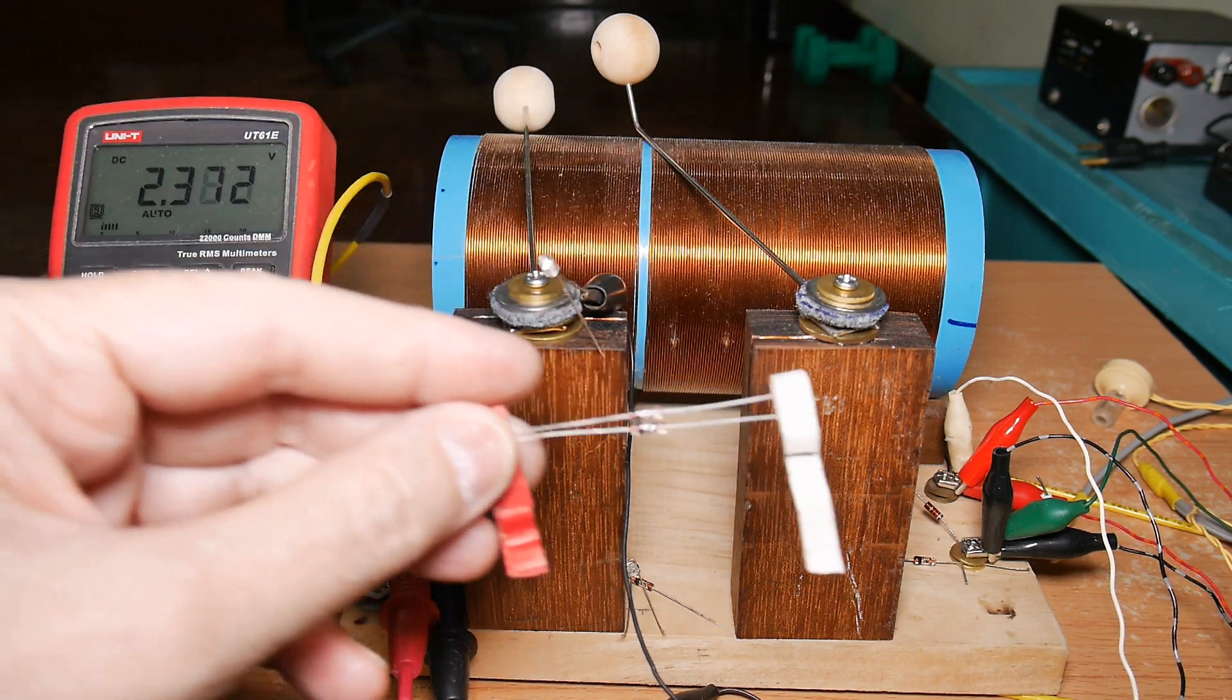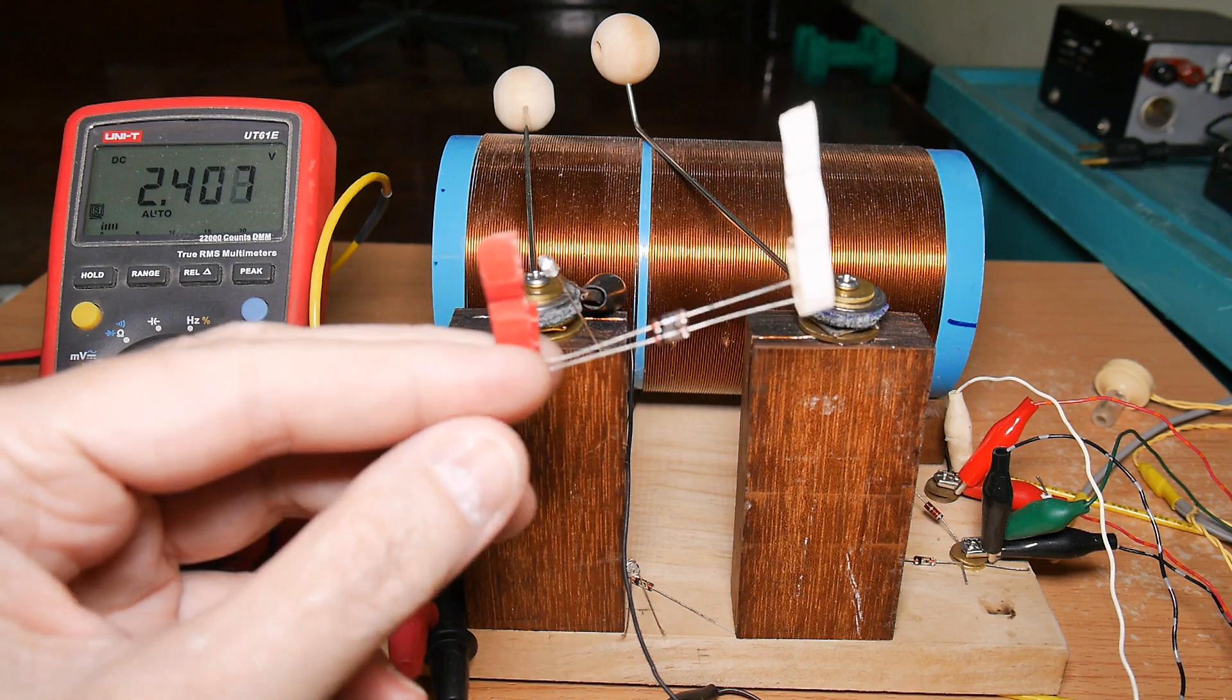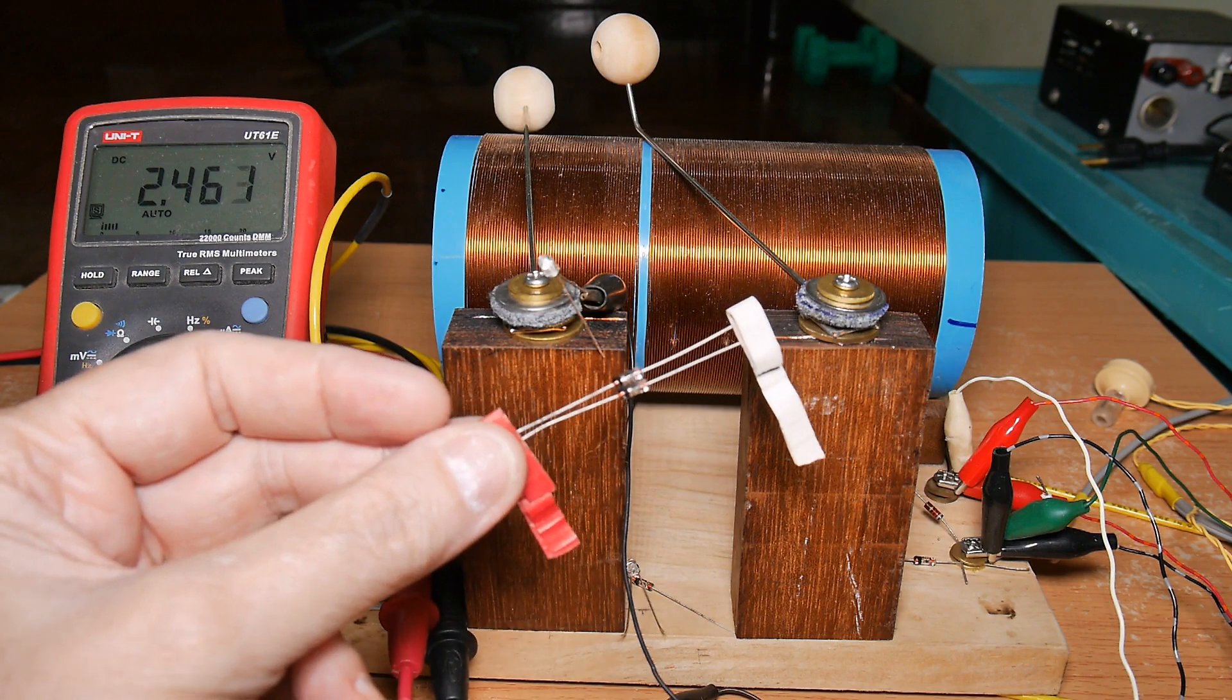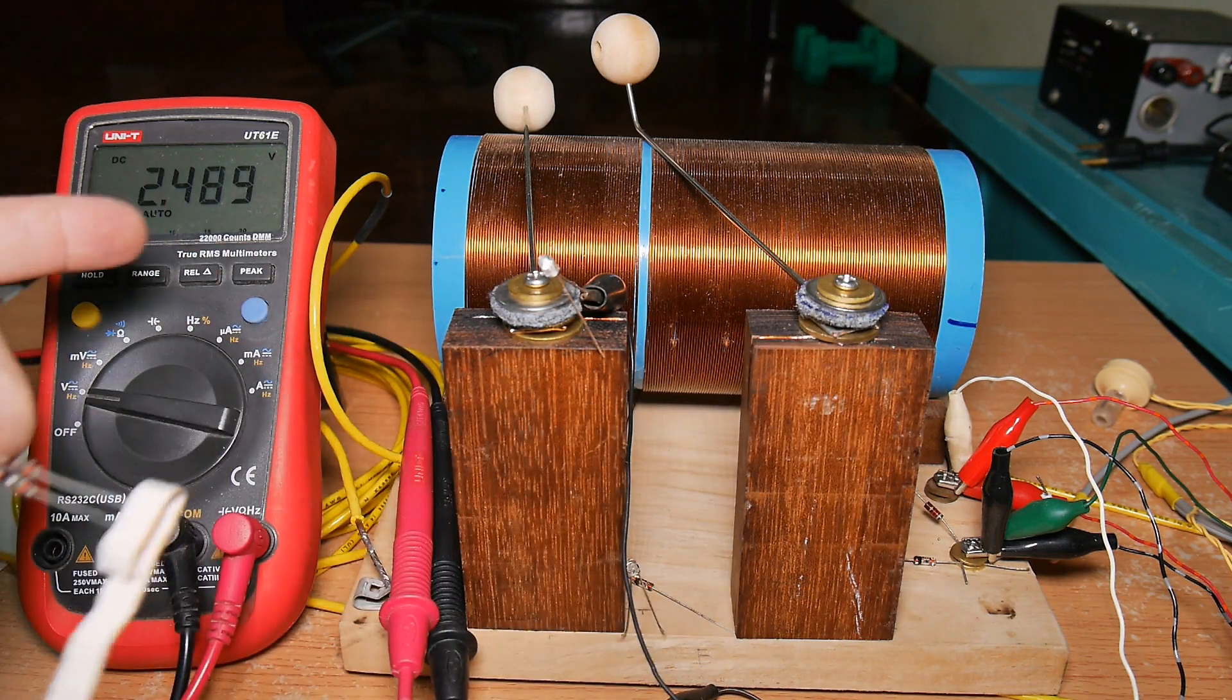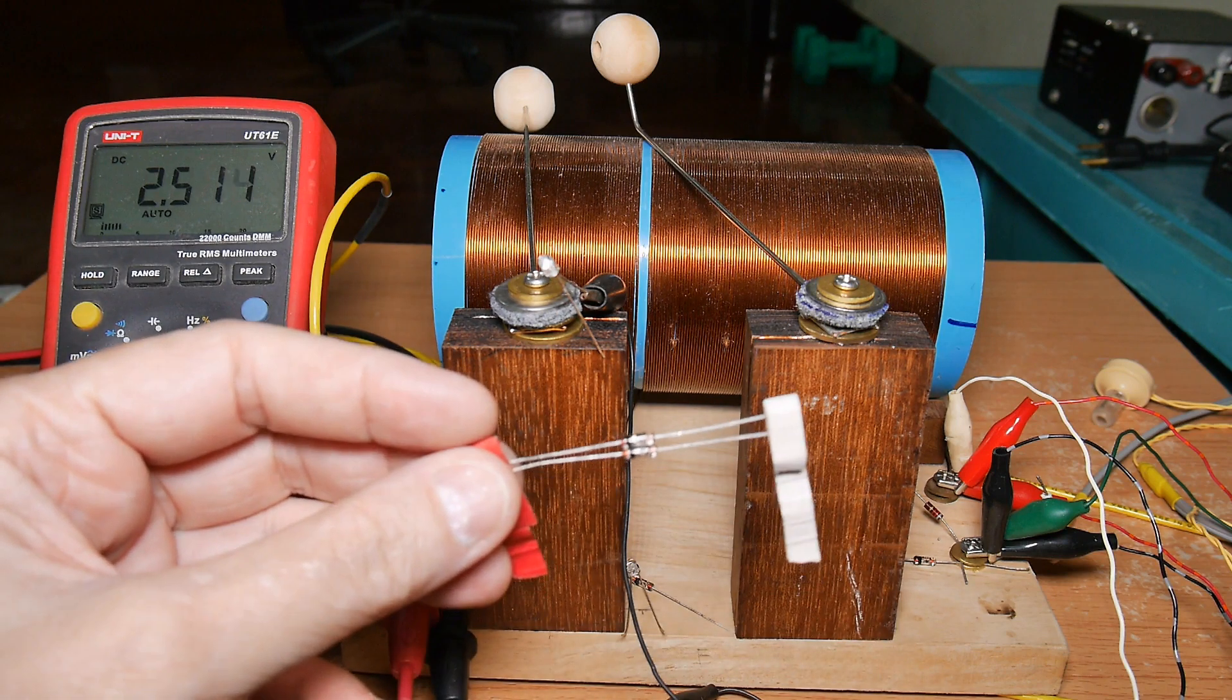And assuming that I can find four of these 1N34A diodes somewhere around the house, then I just might be able to do a little bit better than, looks like it's going to go about 2.5 volts unloaded.